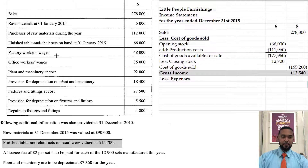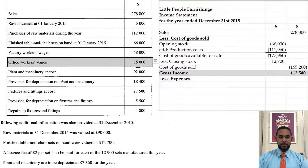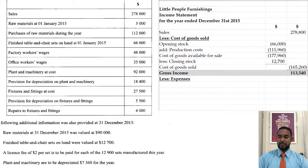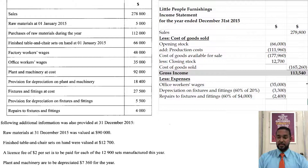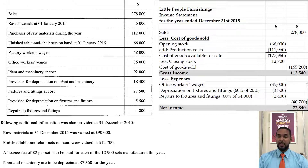Now for the expenses. We have office workers' wages of $35,000. Don't forget the depreciation on fixtures and fittings — that's 20% of $27,500, then 60% of that for the admin portion. And then 60% of the $4,000 repairs to fixtures and fittings also go here. Those are the only three expenses, totalling $40,700. Subtract that from the gross income of $113,540, giving us net income of $72,840.